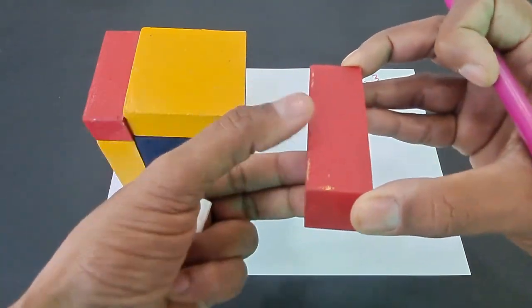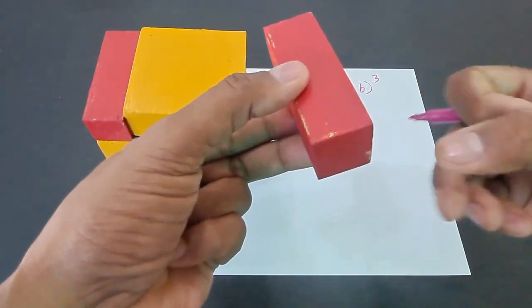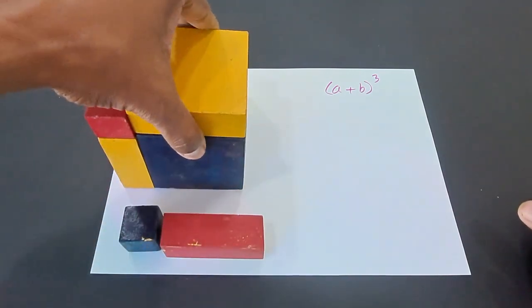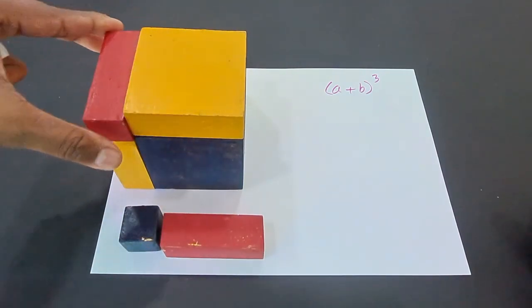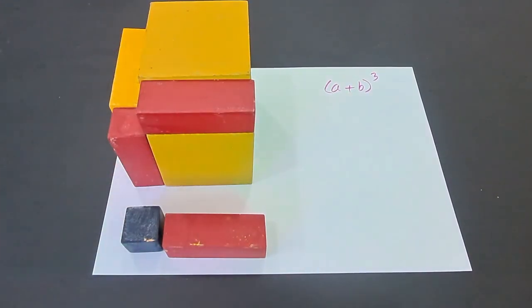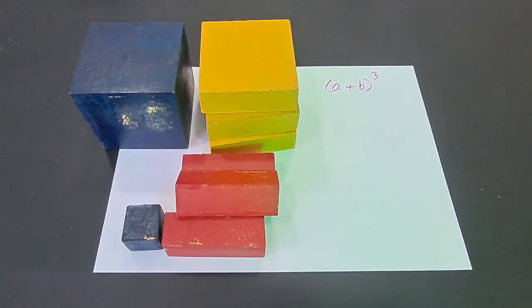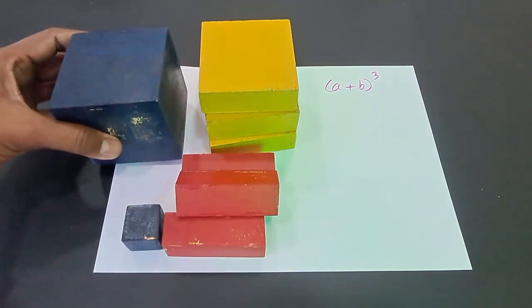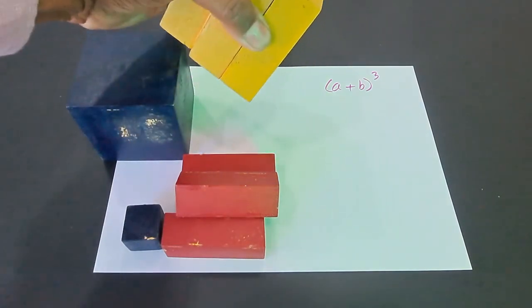Likewise you have many other cuboids also. When we separate out all this big cube into smaller ones, we obtain these eight different solids.